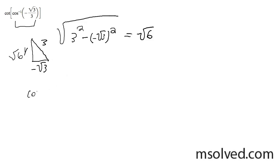The cotangent is equal to x over y, which is going to be equal to negative root 3 over root 6.